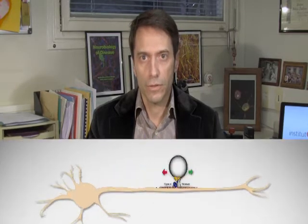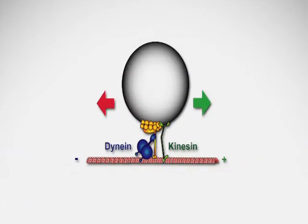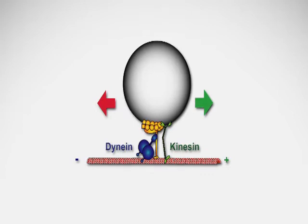These vesicles transport neurotransmitters or trophic factors that are essential for brain function and survival. They are transported over long distances that can be up to 1 meter in the case of motoneuron axons. Vesicles move thanks to molecular motors; kinesin transports vesicles on microtubules to the axon terminals.